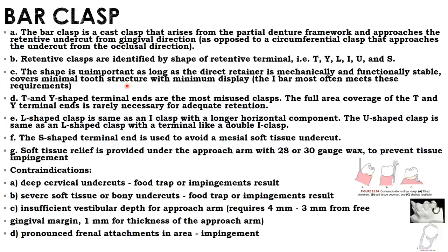Contraindications of bar clasp: deep cervical undercuts, severe soft tissue or bony undercuts, insufficient vestibular depth, pronounced frenal attachment, tilted abutments, soft tissue undercuts, and shallow vestibule. The bar clasp shown is a Y-type, approaching from the gingival portion, contrasting with cast circumferential which approaches from the occlusal surface.